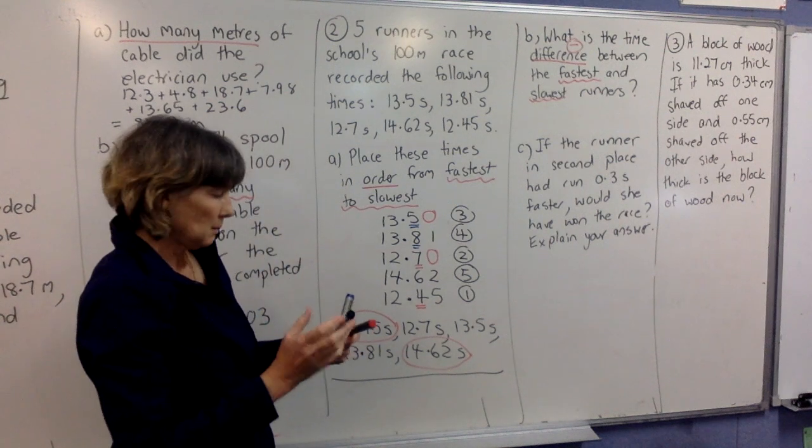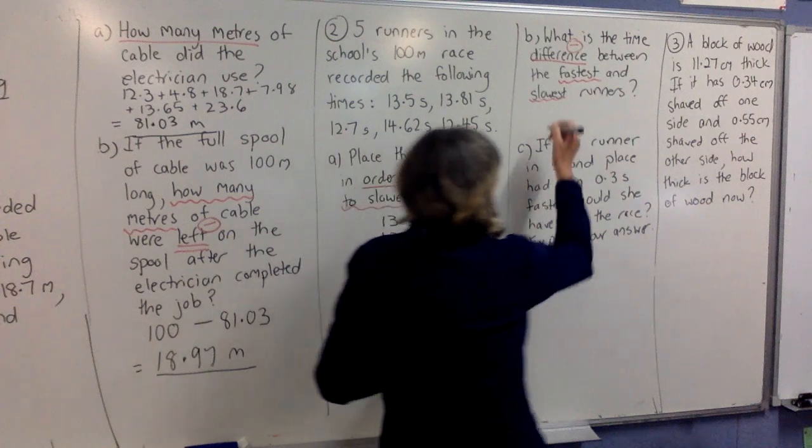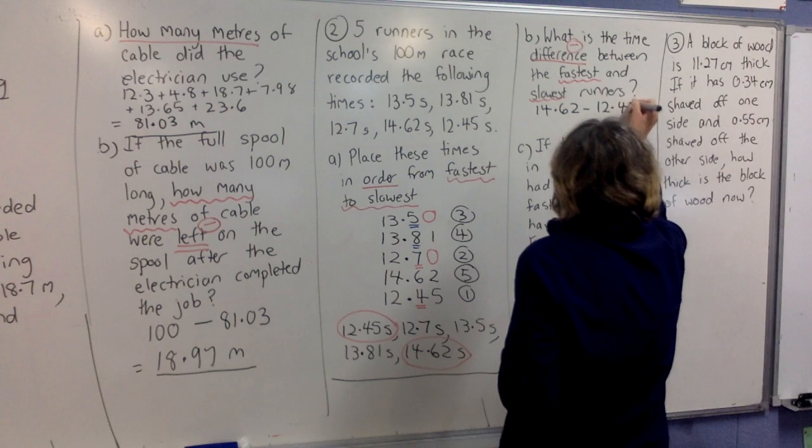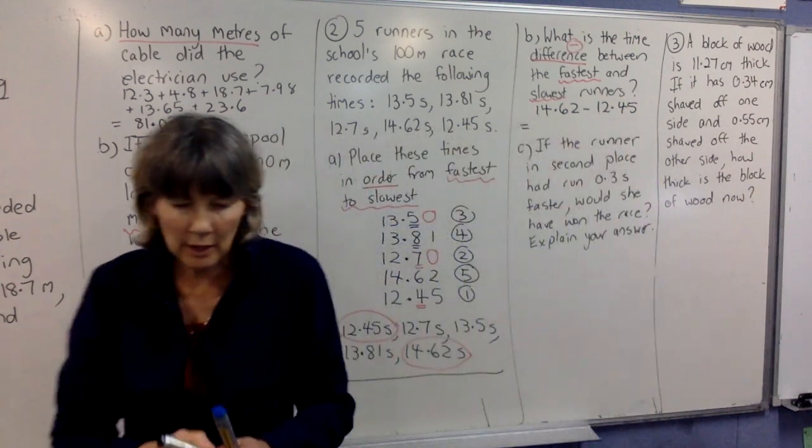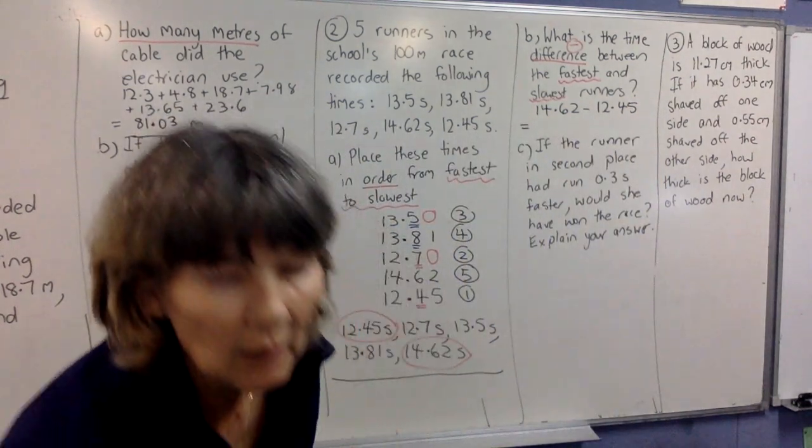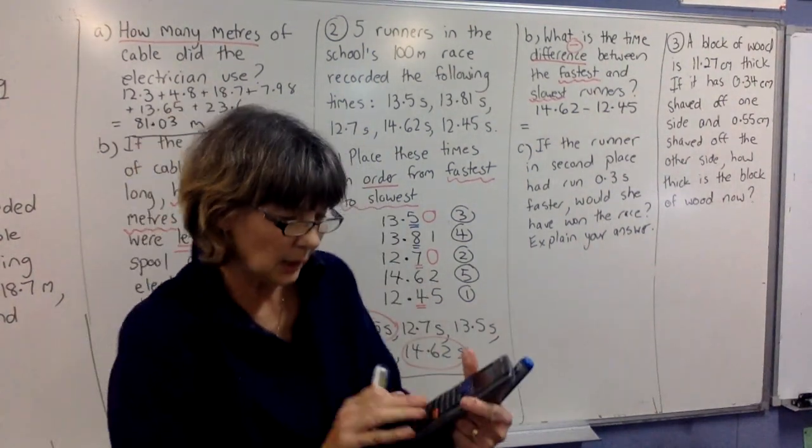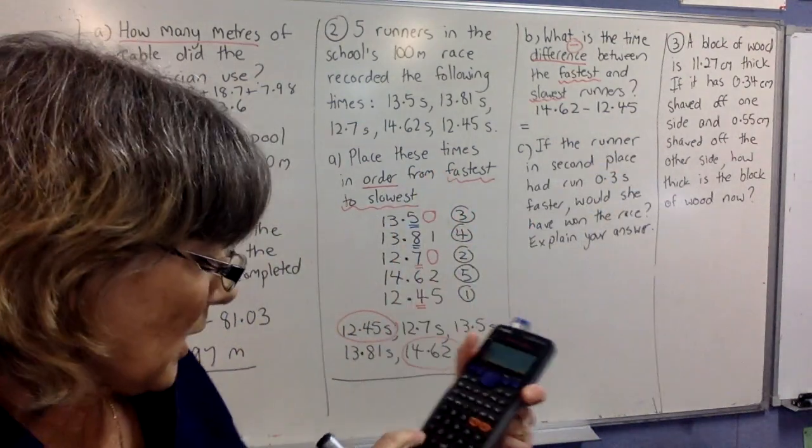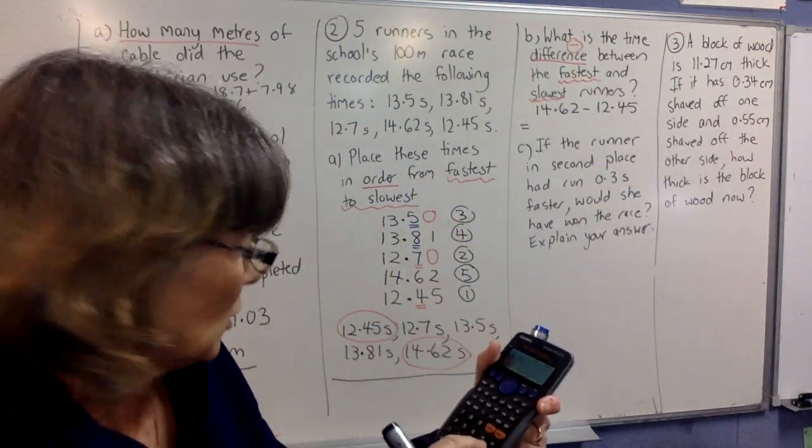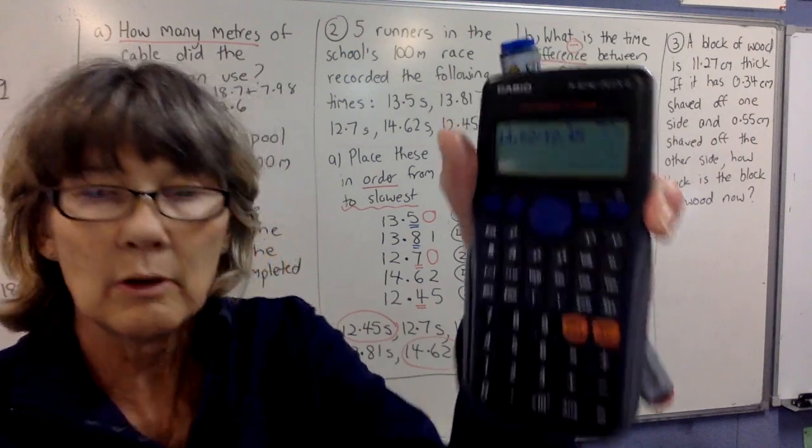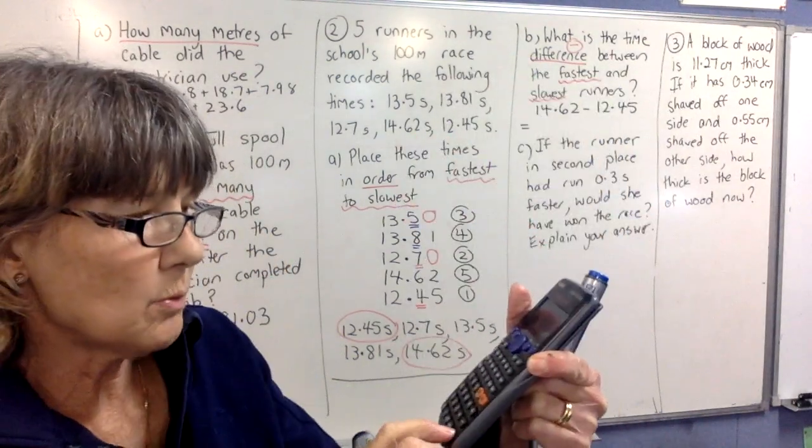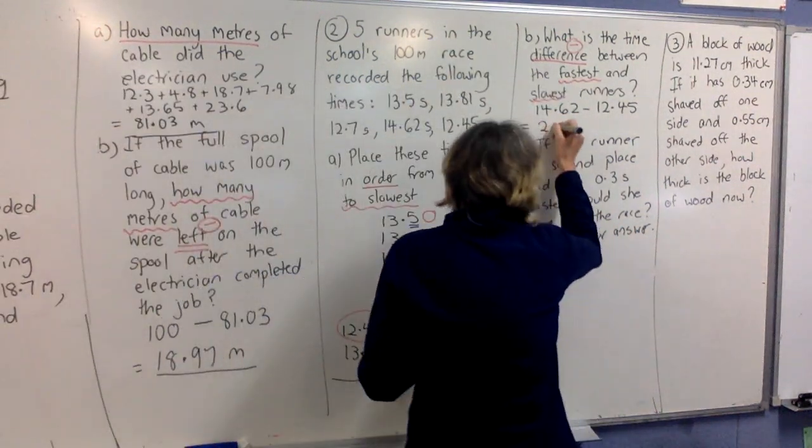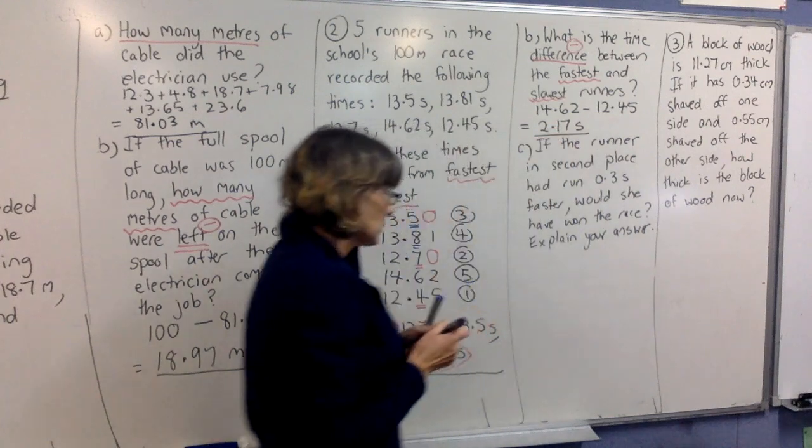So, you're going to do the bigger number minus the smaller number. So, we're going to do 14.62 minus 12.45 equals. Now, you can go to your calculator because you've done your working line. Do not press anything into your calculator if it's not already written down. Right, so now mine's written down. Over there, I can type it in. 14.62 minus 12.45. Right, now I can press equals. 2.17. And that's the difference in seconds between the fastest and slowest runners.